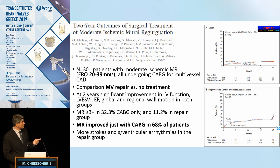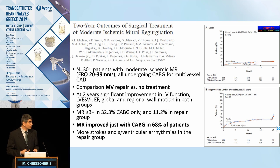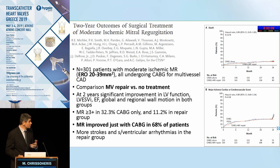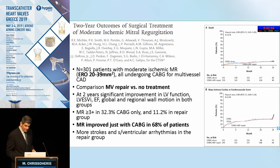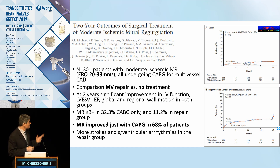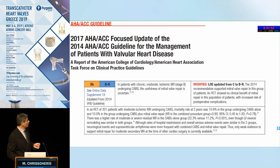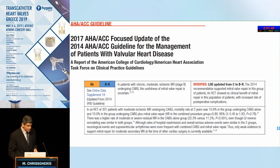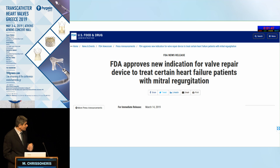Another study shows that in patients with moderate ischemic MR (EROA 20–39 mm²) undergoing bypass surgery, adding a mitral valve repair procedure provided no real benefit. In fact, many patients with moderate ischemic regurgitation improved with just revascularization. So for patients undergoing bypass with moderate ischemic MR, it is a class 2B indication to repair the valve.